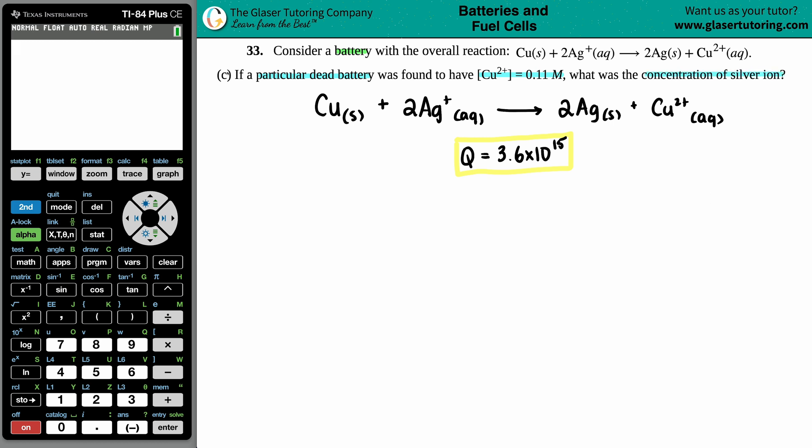So since we're on letter C, there is a couple of things that I had to pull from letter B to answer this problem. In letter B, they did discuss a dead battery. And just know that if you have a dead battery, that means that the cell potential, the E cell is zero. Zero volts, that is. Now with that zero volts, we had to find out what the reaction quotient was, the Q value. And it turns out that we calculated it to be 3.6 times 10 to the 15th.